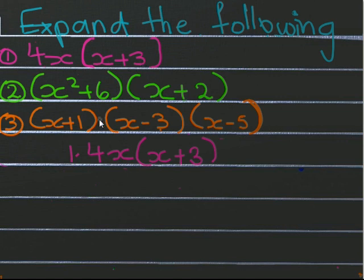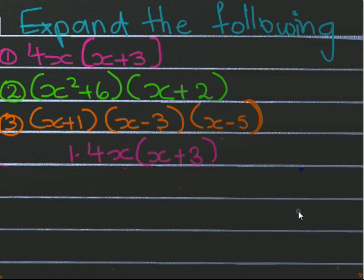The next one is two sets of brackets pushing against each other with their own addition or subtraction happening inside. Then they might make it even harder and give you something like three brackets pushing against each other. When they ask you to expand them, what they mean is get rid of the brackets and write down your answer in the form of something plus or minus something — definitely no brackets.